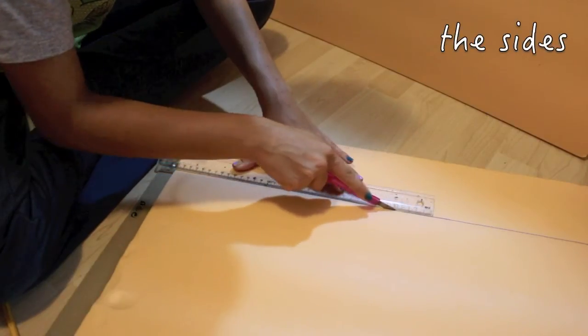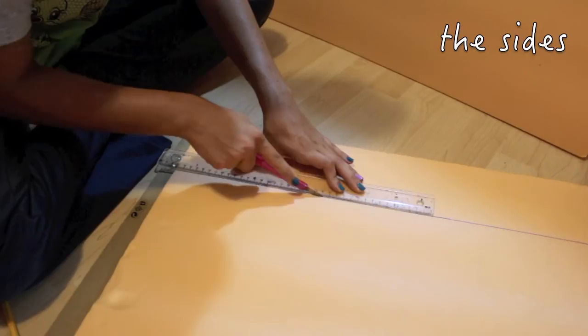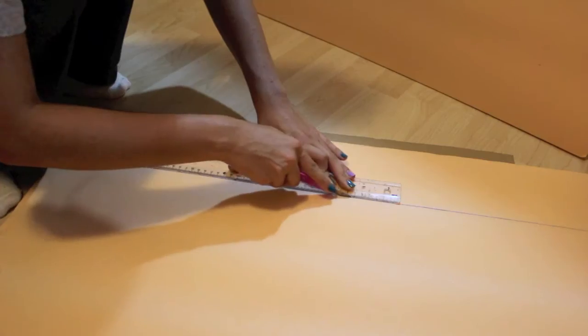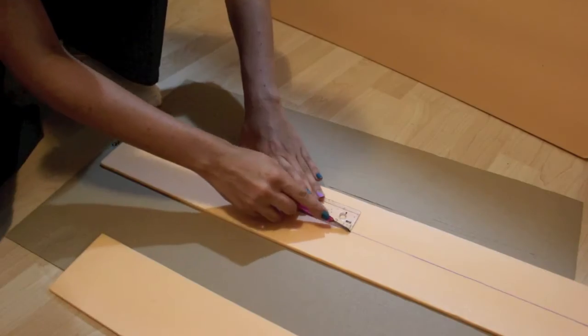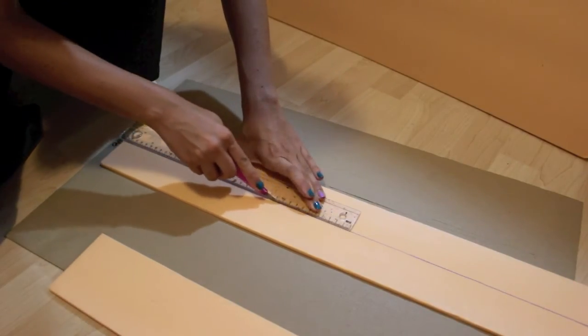Next are the sides. I'm cutting a one meter by 10 centimeters piece, then I'm measuring the middle and cut it in half so I have two sides.